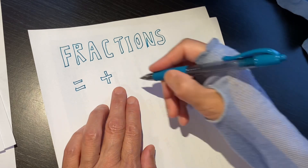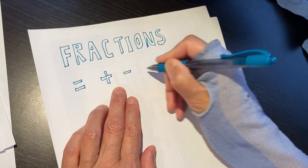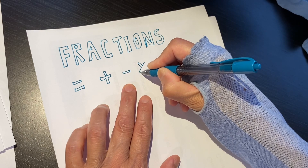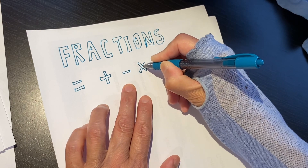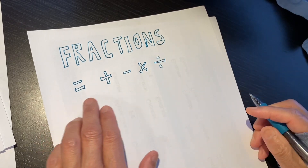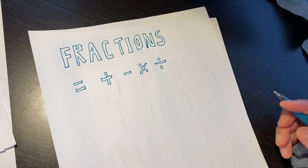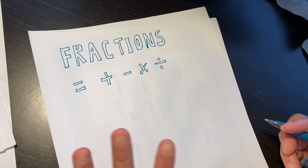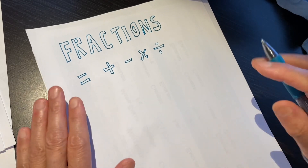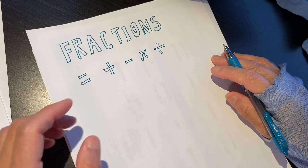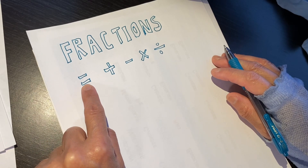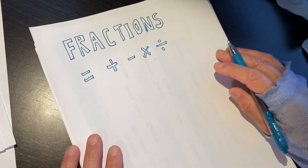You can see I am writing 1, 2, 3, 4, 5. I have written 5 signs: equal sign, addition, subtraction, multiplication, and division. So we will learn about the 4 operations and equivalent fractions. And that's what we are going to cover through this class.